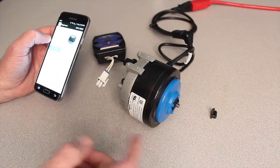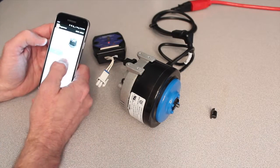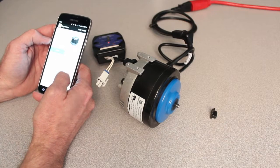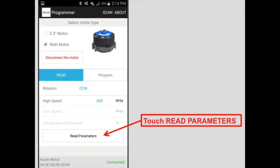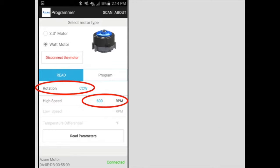The motor is connected. The motor stopped. So we can read the parameters. And the phone says that the motor is set for 600 RPM counterclockwise rotation.